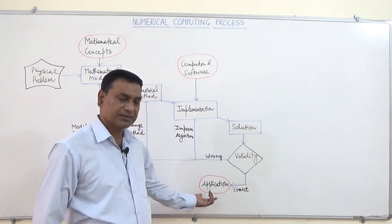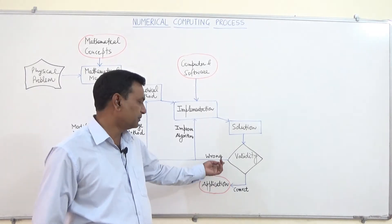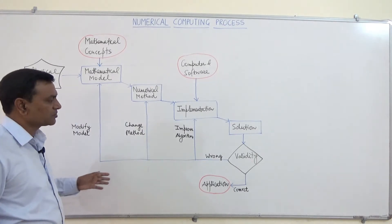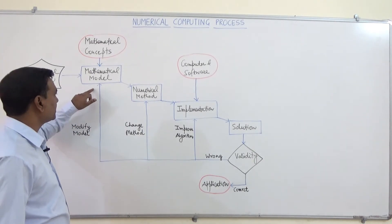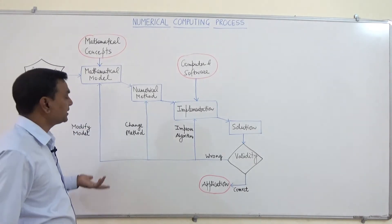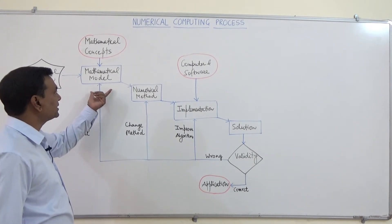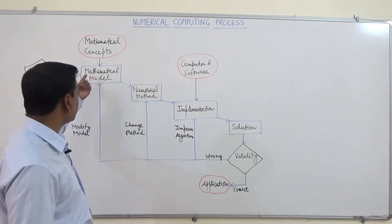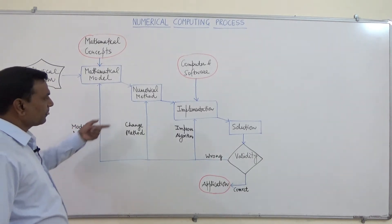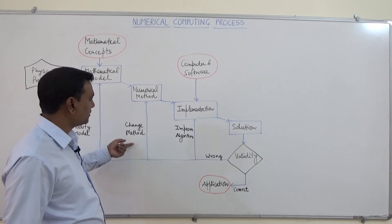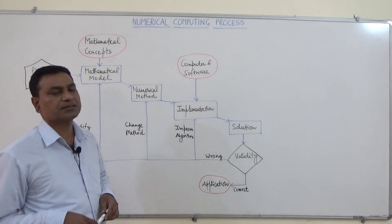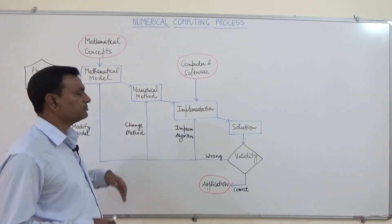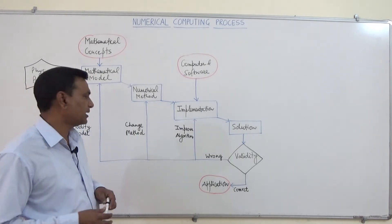Then we make the program, find the solution, and check its validity using test data. If it is correct, then this is the final application. If it is still wrong, we may go back to these steps again. If the mathematical model is incorrect, we will modify the model. If the numerical method is incorrect, we will change it — either make minor changes or change the entire method.